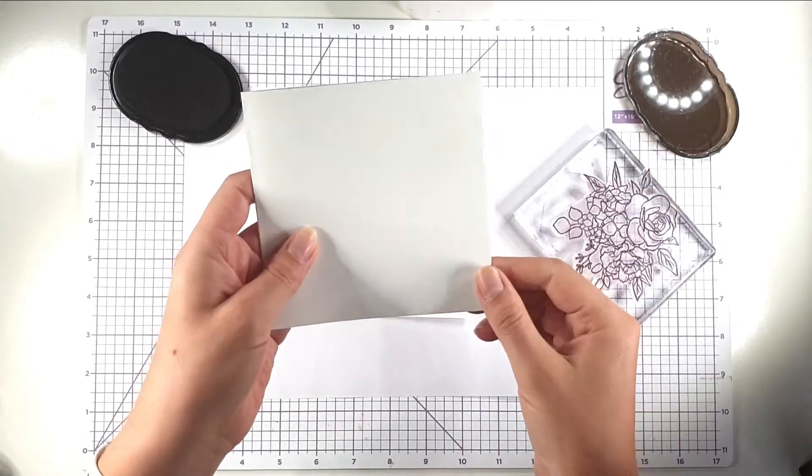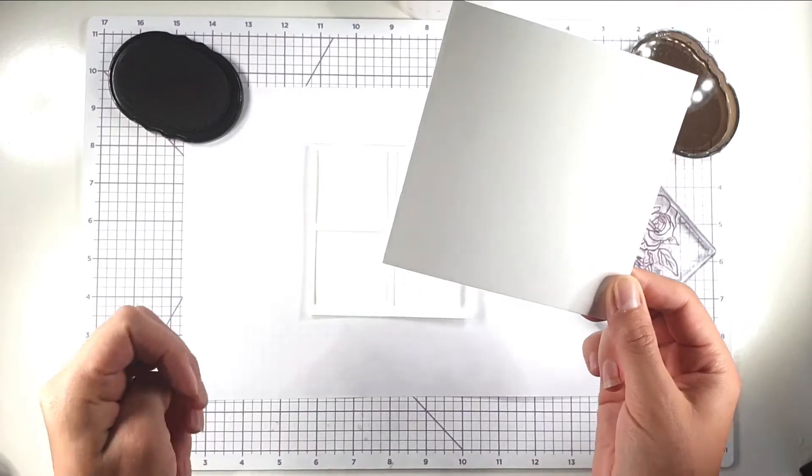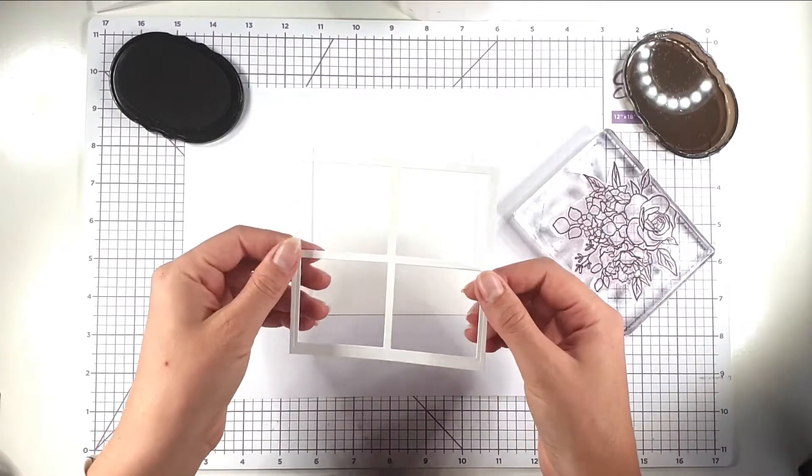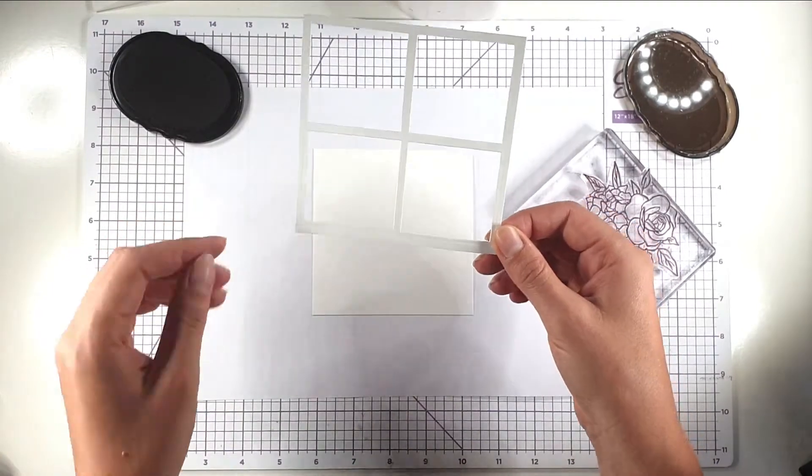So for this card I've got a five inch square card made of Nina Solar White cardstock, so it's all Nina Solar White, and then I've got this frame so this is about four and three quarter inches square.